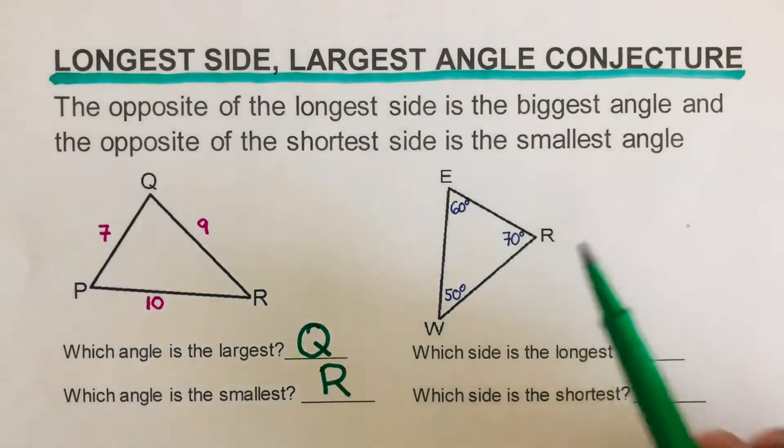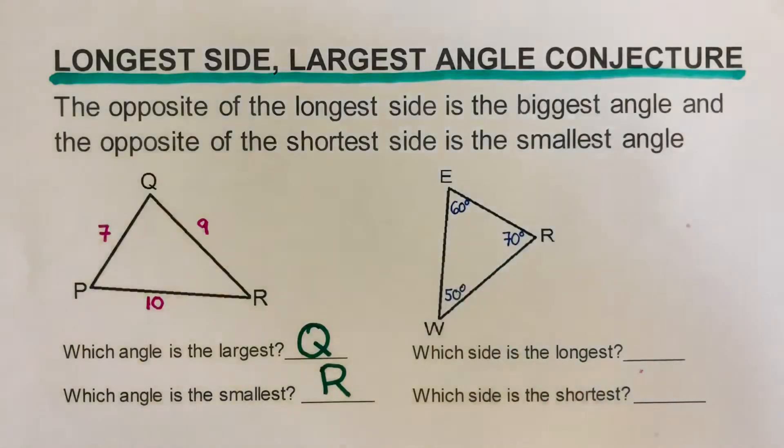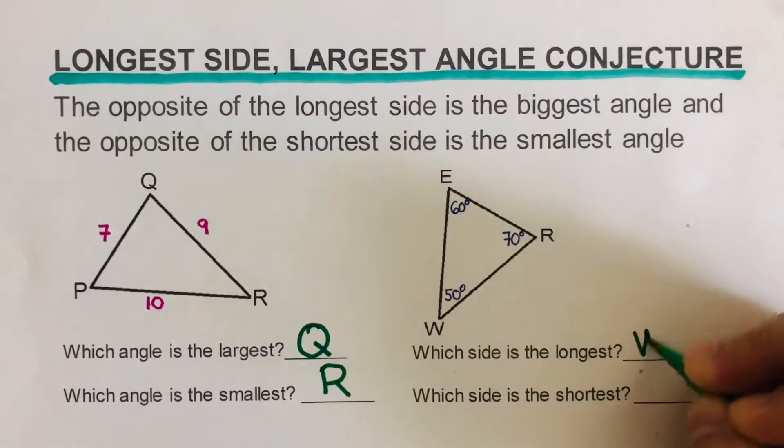So we start with the longest first. The biggest angle will have the longest side. Since this is 50, 60, and 70, 70 is the largest one. So across from it is the longest. That would be WE.